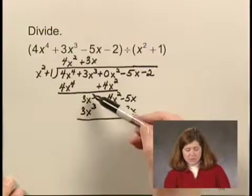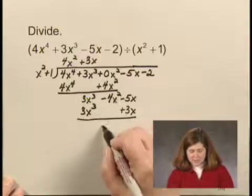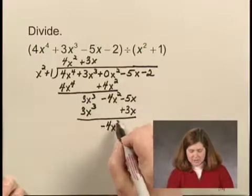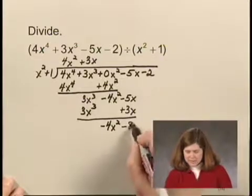And I subtract. 3x^3 - 3x^3 is 0. -4x^2 - 0 is -4x^2. -5x - 3x is -8x.